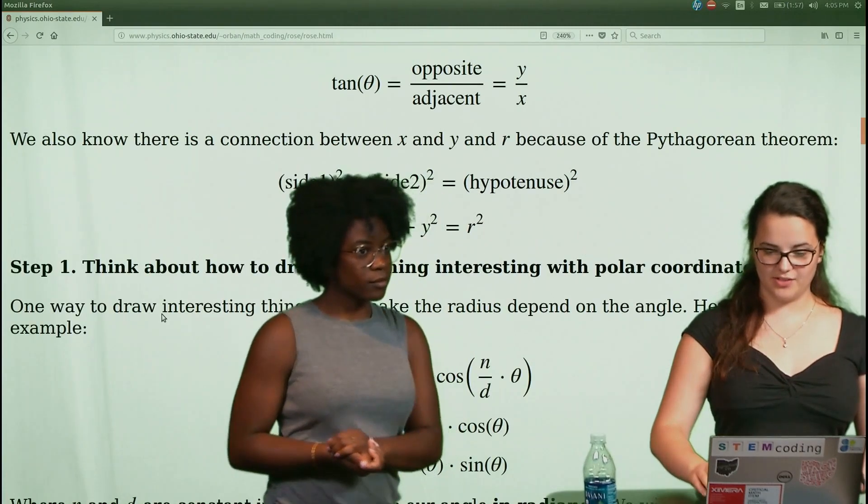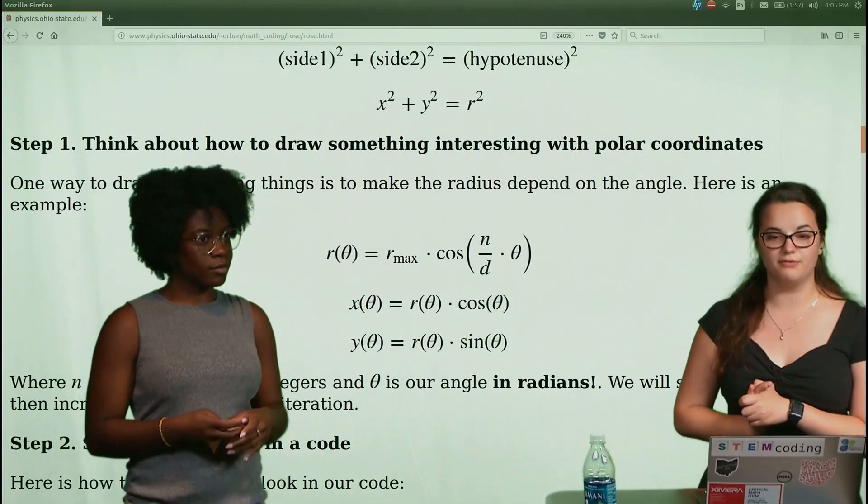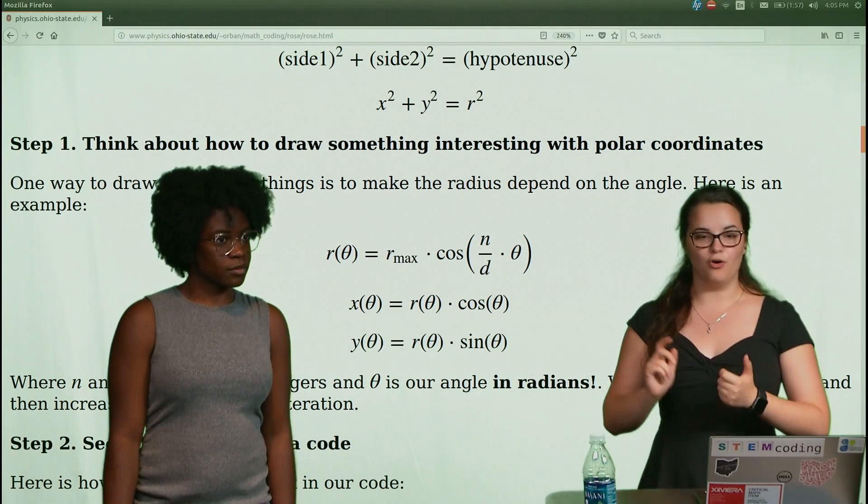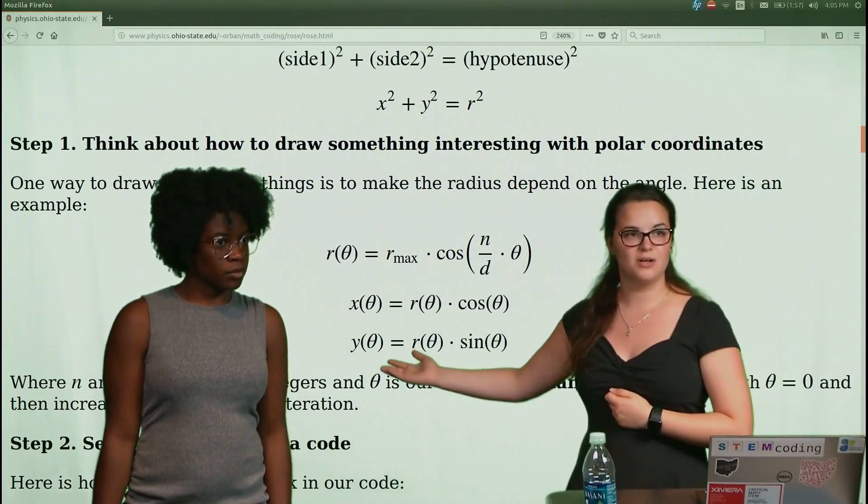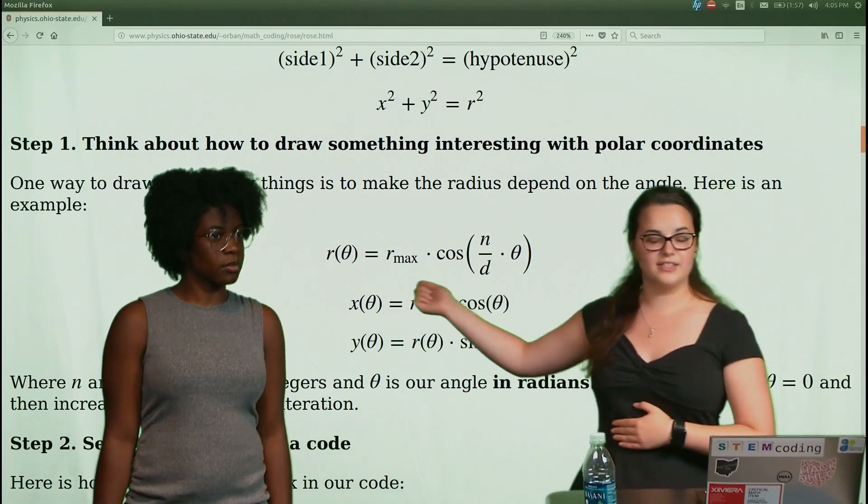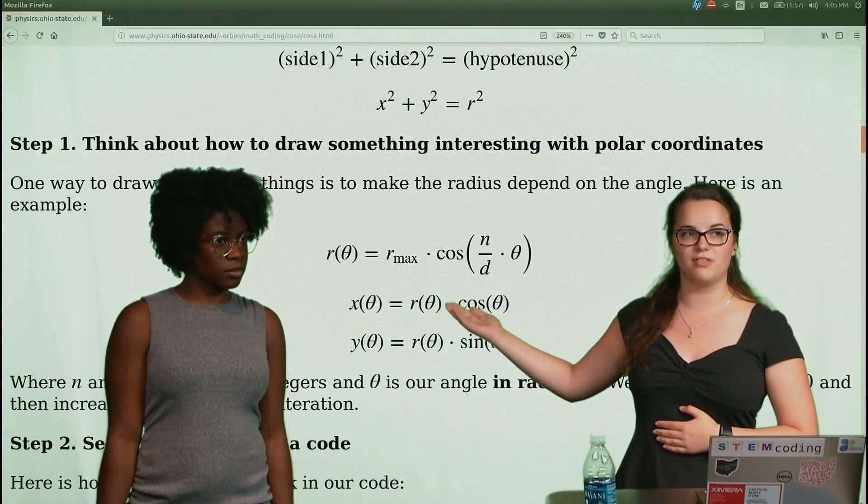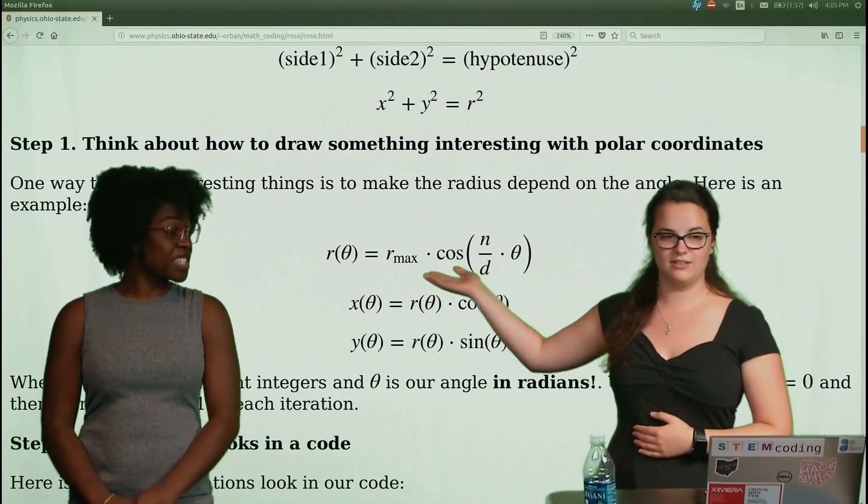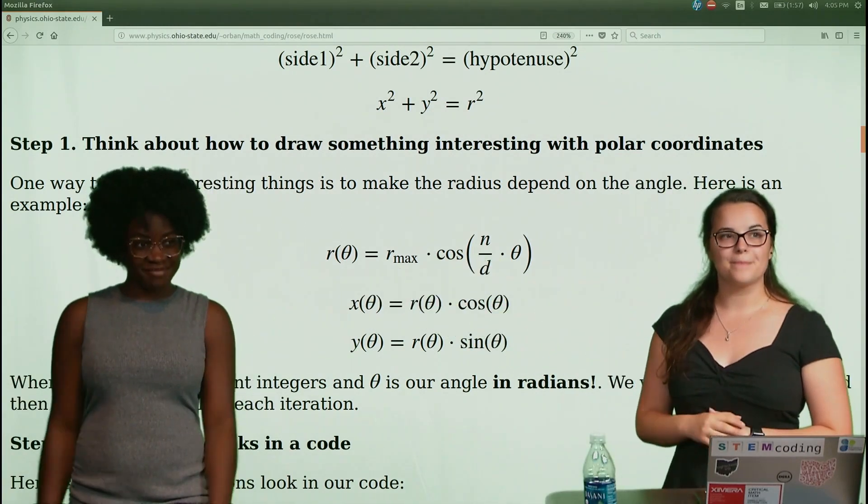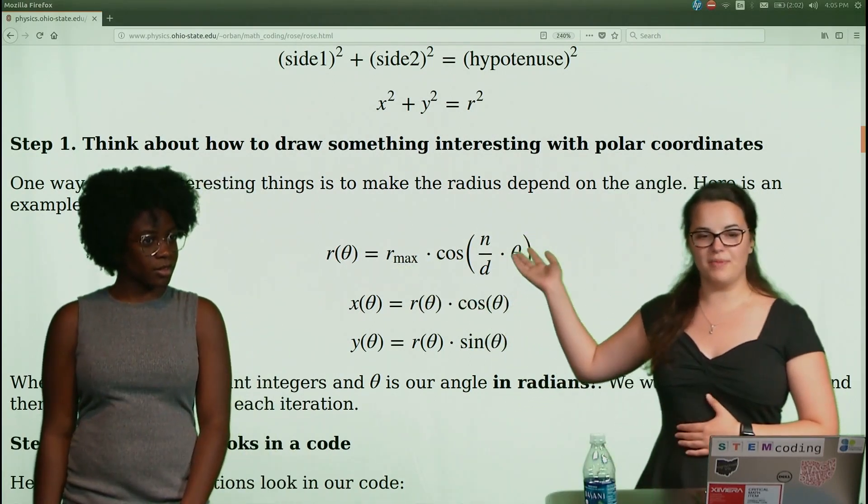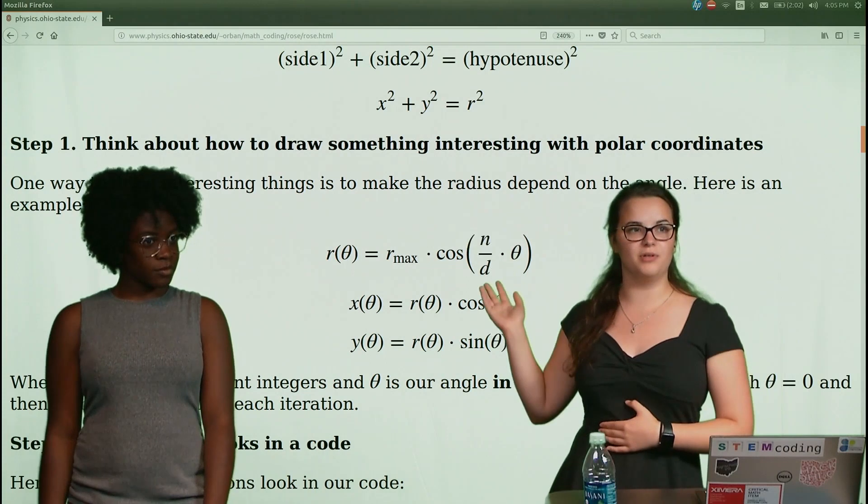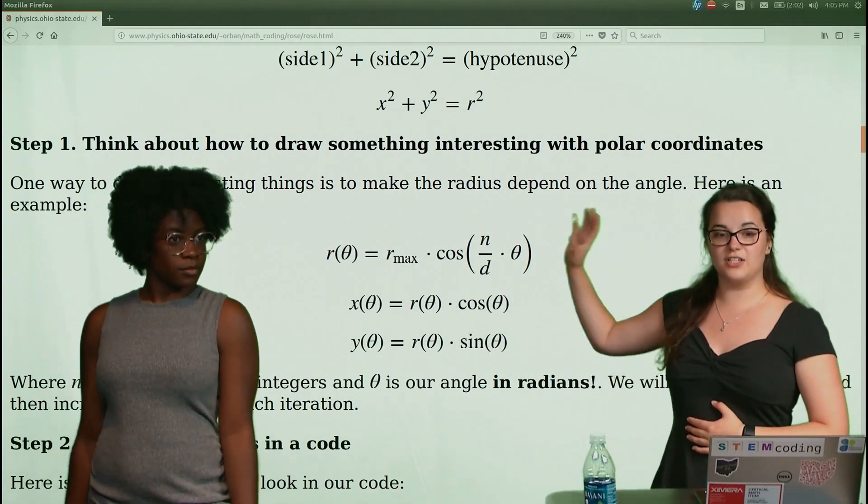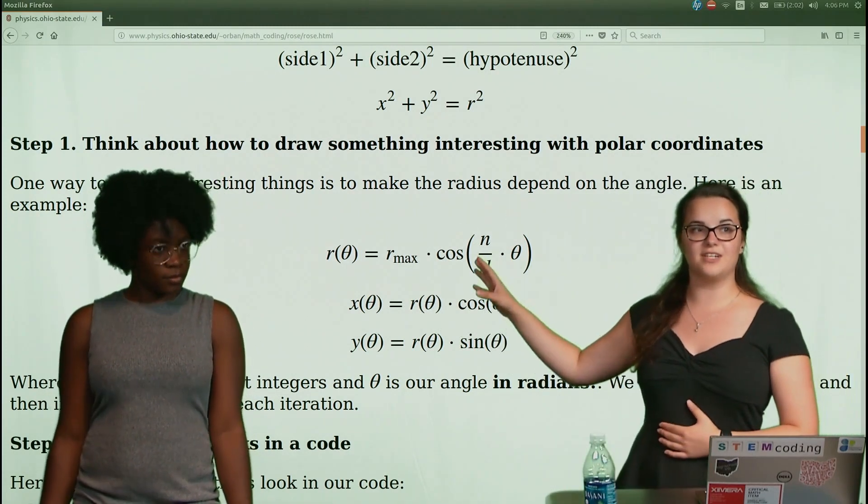Ok, let me zoom in on functions we're gonna be using. So as I mentioned before, sine of theta is equal to Y over R, which is why this Y of theta is equal to R of theta times sine of theta. And same goes for X, X of theta is equal to R of theta times cosine of theta. But then we're also gonna be using this function right here. A very fancy function or variable function at that. And it is R of theta is equal to R max times cosine of some integer variables N and D, so N over D times theta. So what we can tell from here is that our radius is in terms of theta. So we can find radius based on what theta is.